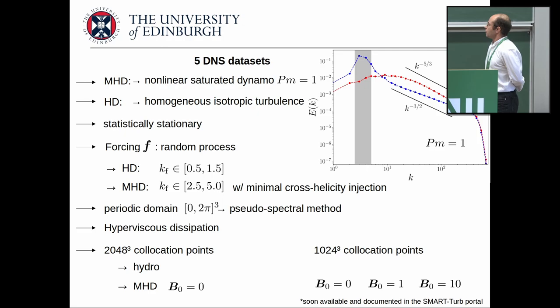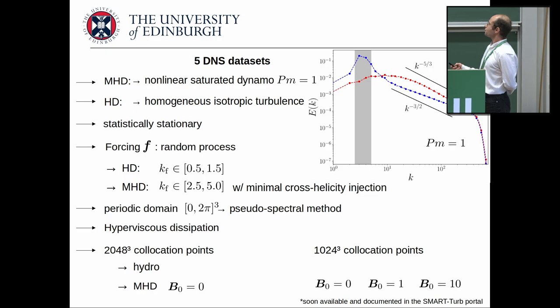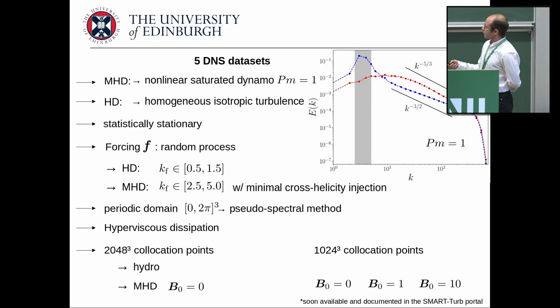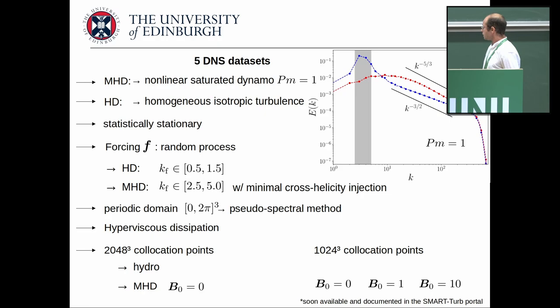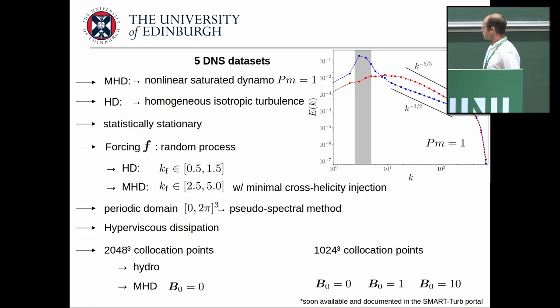For the numerical results, we used five datasets: one for hydrodynamics and four MHD configurations — either high resolution with zero mean magnetic field, or lower resolution varying the magnetic field strength. We compare with a high-resolution hydrodynamic simulation. All data are hyperviscous; we've also compared with viscous results and they are very similar, but here I only show the hyperviscous cases.